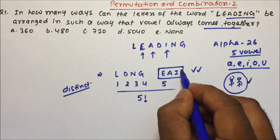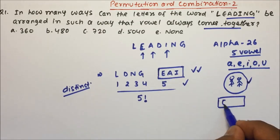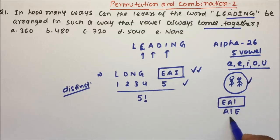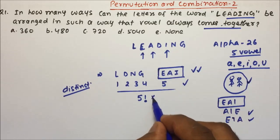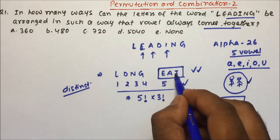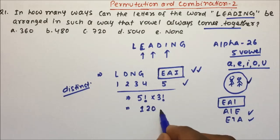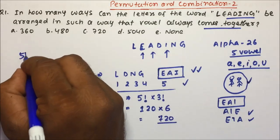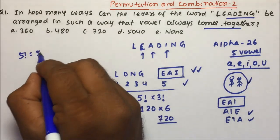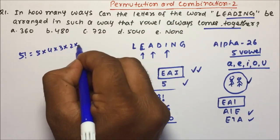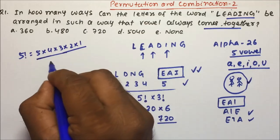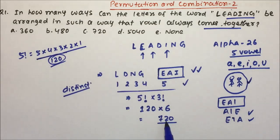Now, the 3 vowels inside the box will also get arranged among themselves — E, A, I can be arranged as EAI, AIE, EIA, and so on. Since there are 3 distinct letters inside the box, they arrange in 3 factorial ways. So the total is 5 factorial × 3 factorial = 120 × 6 = 720. Therefore, option C is the correct answer for question number 1.